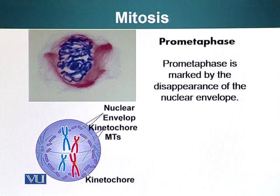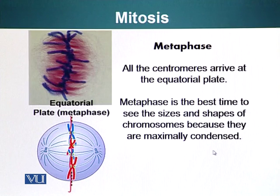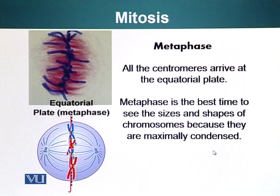The next stage is metaphase. All the centromeres have arrived at the equatorial plate, which is basically in the middle of the cell. The chromosomes arrive here and are in metaphase. This is also the best time to see the sizes and shapes of the chromosomes because now they are maximally condensed. The hallmark feature of metaphase is that chromosomes are lined up at the equatorial plate.